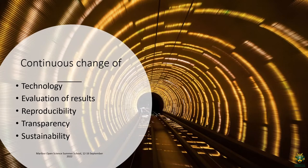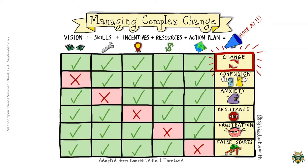How can we achieve continuous change? If all the elements of the complex change are in place, then we will achieve change. If any of them is missing, then we won't succeed. So vision, skills, incentives, resources, and an action plan are needed. I will give the floor back to Edith, and she will get into open peer review.